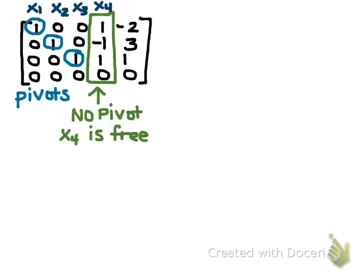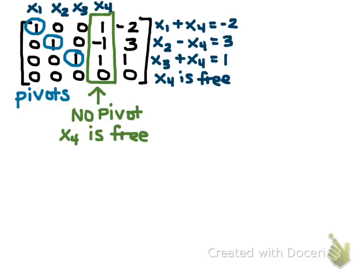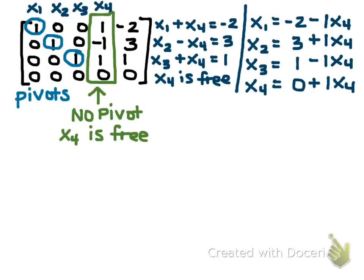So translating this into my equations, I have the top row gives me x1 plus x4 equals negative 2. Second row gives me x2 minus x4 equals 3. The third row gives me x3 plus x4 equals 1. And then, as we already discussed, x4 is free because there's no pivot in the fourth column. So now I'm going to translate all of these into x1 equals something, x2 equals something, x3 equals something, and so on. So I just take each equation, and I isolate the variable I'm trying to solve for.